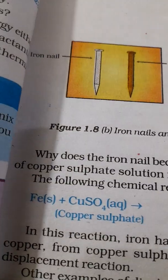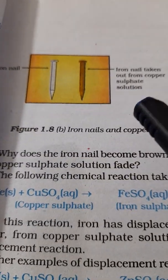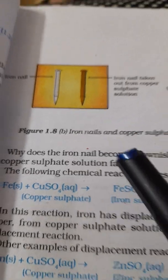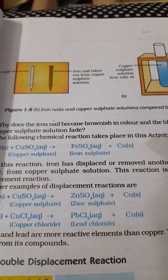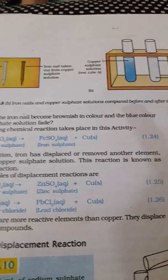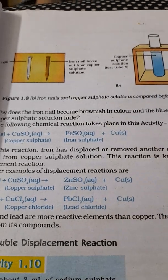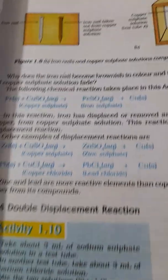Now after some time if you take out the iron nail from the copper sulphate solution you can see that the iron nail becomes brownish in color and the blue color of copper sulphate solution is fading. Why does it happen?